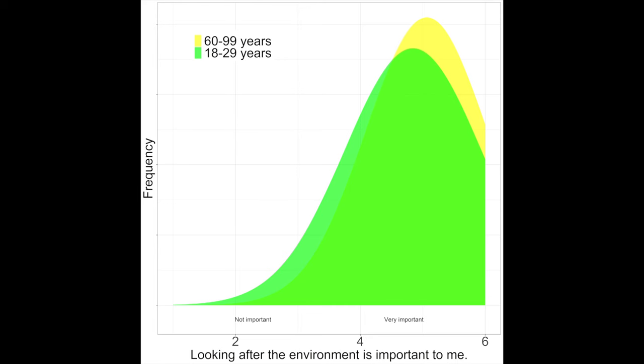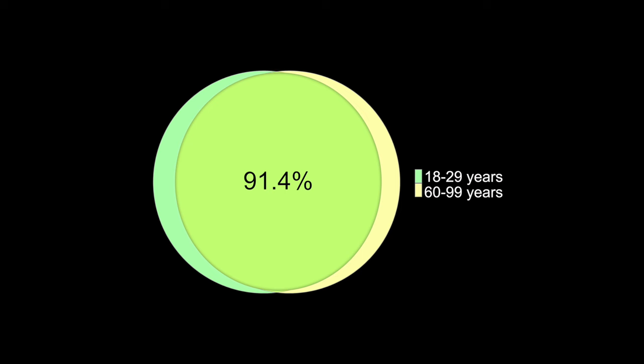Those value similarities extend to other groups. If we look at people from different generations — such as younger and older people — we can see that in both groups, younger and older people say that looking after the environment is important or very important to them. If we quantify the similarities, we see 91% similarity in the responses of younger and older people, and most importantly, both groups agree it's very important or at least important to look after the environment.